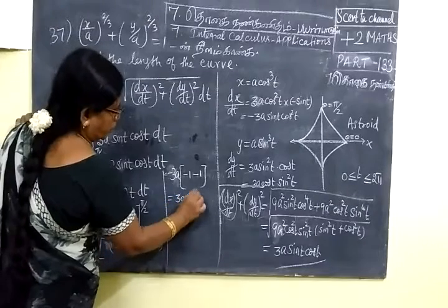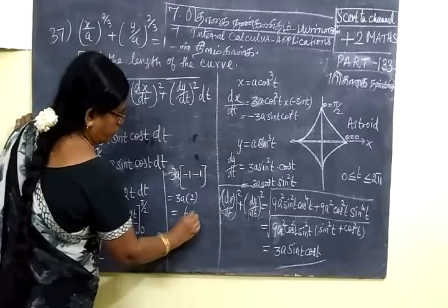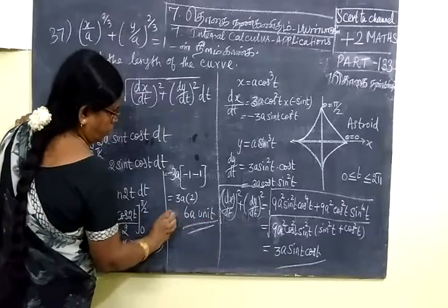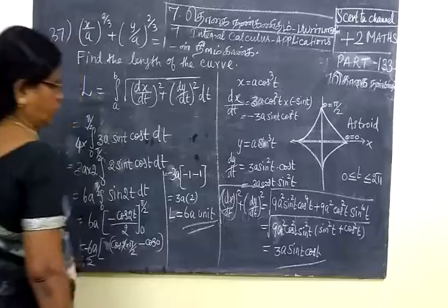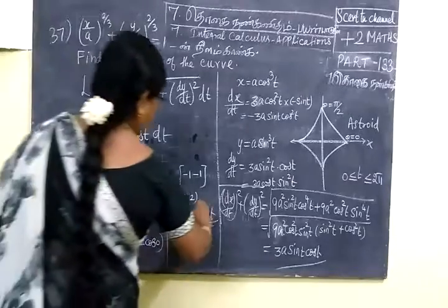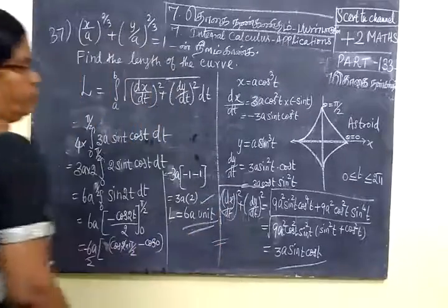Then here 2, so equal to 6a unit. So length of the arc equal to 6a.